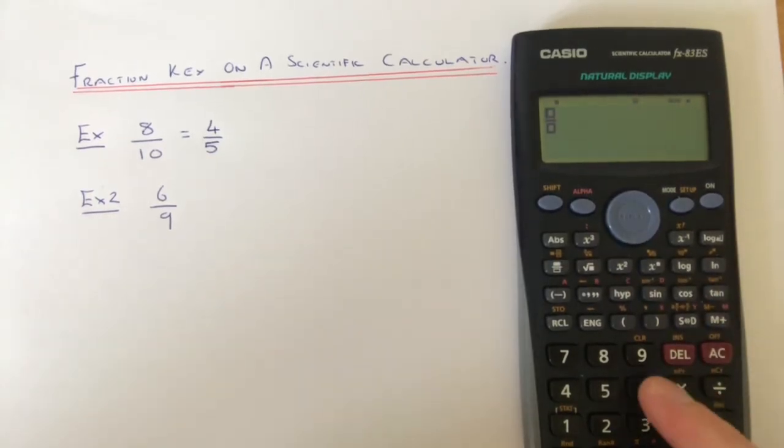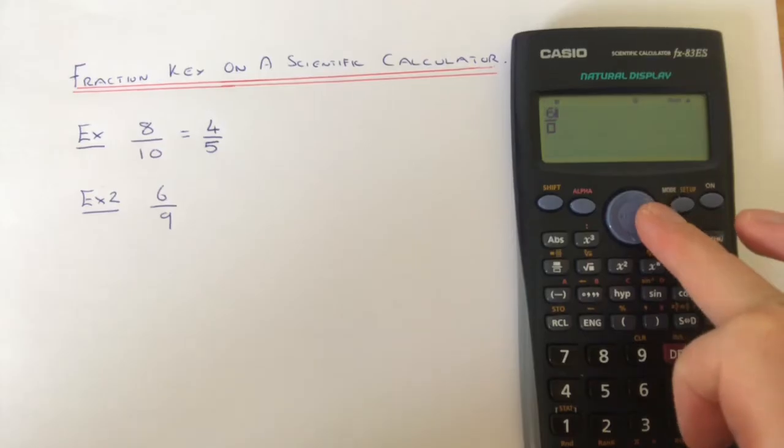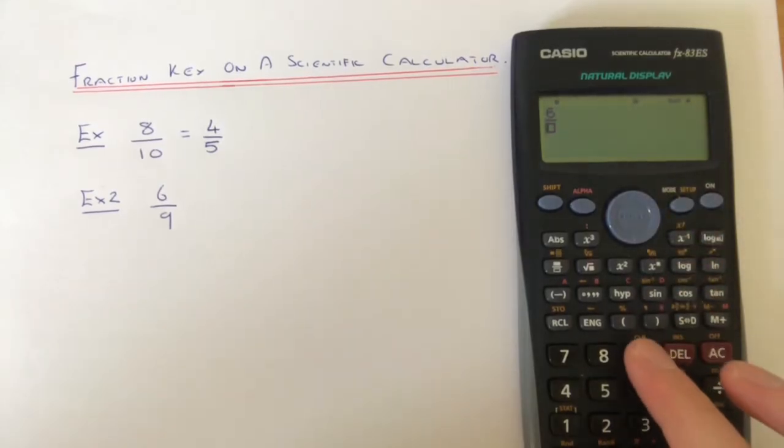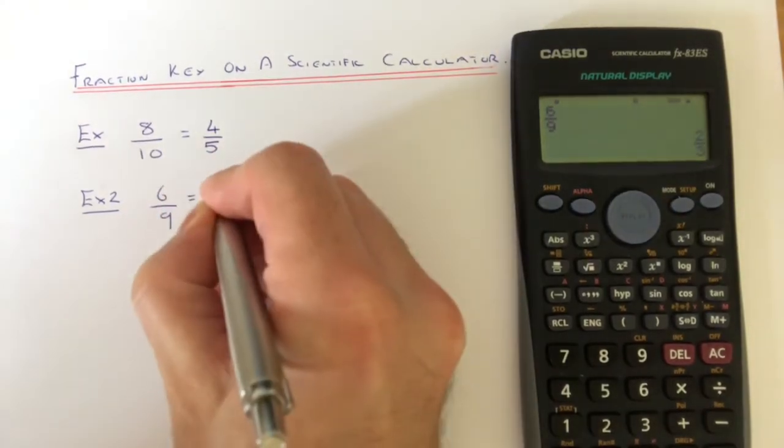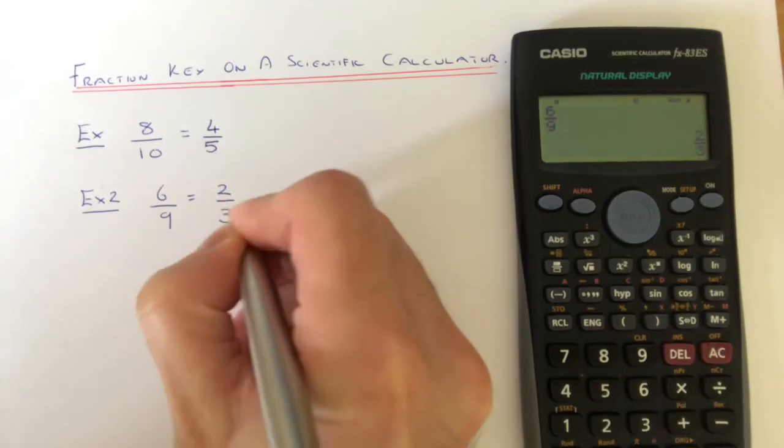type in 6 on the numerator and again use that arrow key at the top to put 9 on the denominator. Hit the equals and that will simplify the fraction for you, which is 2 thirds.